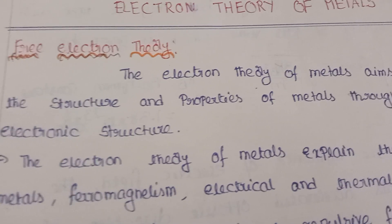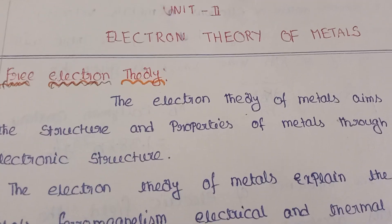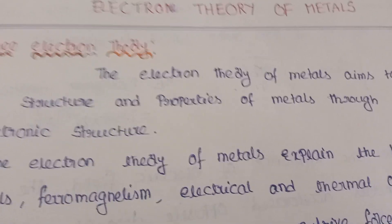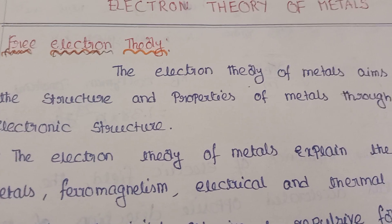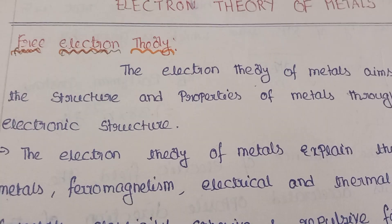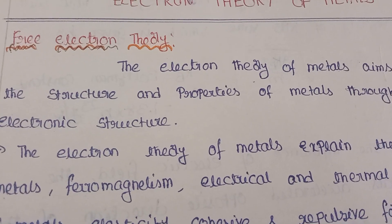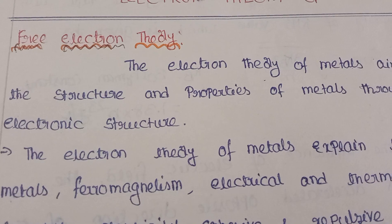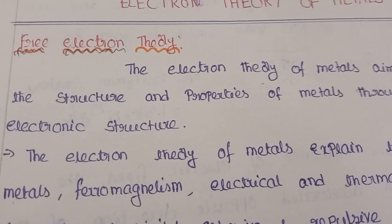Generally, free electron theory can exist in three stages. First one: classical free electron theory. Second one: quantum free electron theory. And third one: band theory of solids.